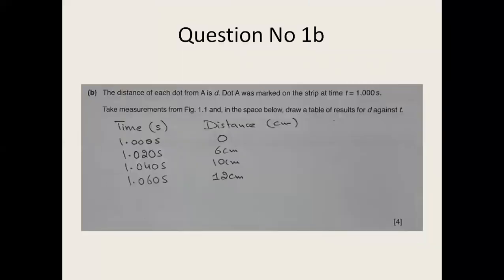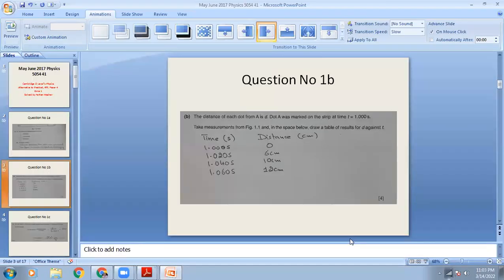At 1.00 seconds, the distance from A is zero. At 1.020 seconds, the distance from A is 6 centimeters — measured with the scale. After 1.040 seconds it is 10 centimeters. And after 1.060 seconds it is 12 centimeters.